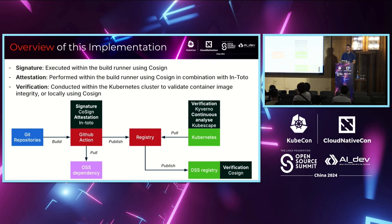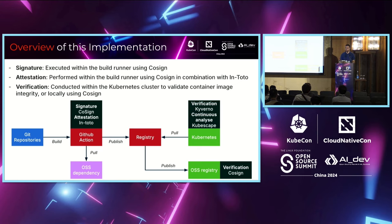Final question: We practice GitOps and deploy bundles of Kubernetes manifests into our cluster. How can we sign these bundles using your tooling? Answer: With Cosign you can sign blobs, so you can also sign your Kubernetes resource manifests. You can also link build provenance to those files and attach them to the signature system. That concludes the talk — if you have further questions I can take them offline. Thanks for your attention.